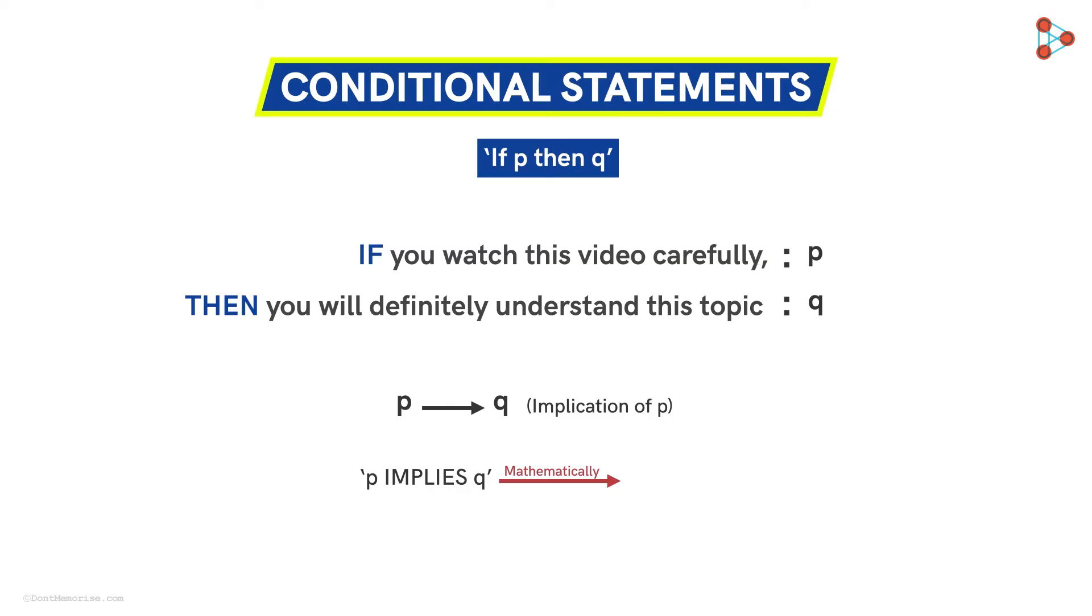Mathematically we can also write it as this, which is read as P implies Q, which means that if P happens then Q will definitely happen. That is, if P then Q.